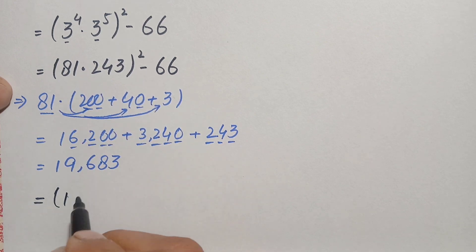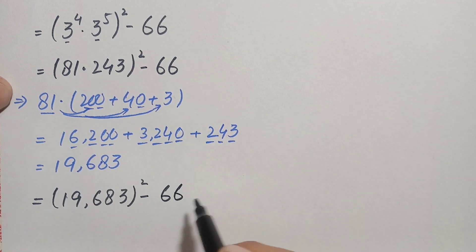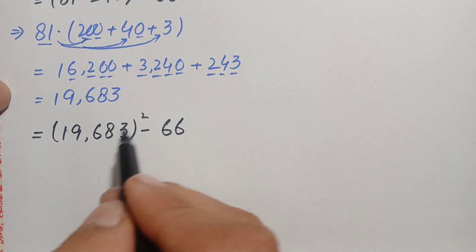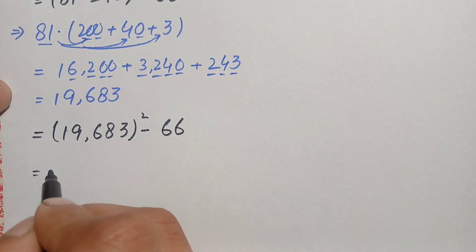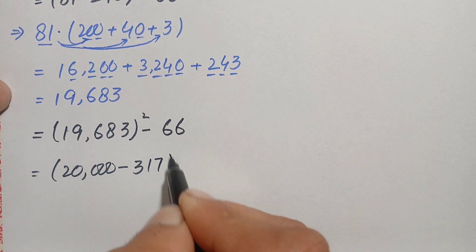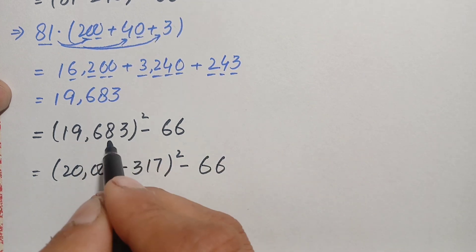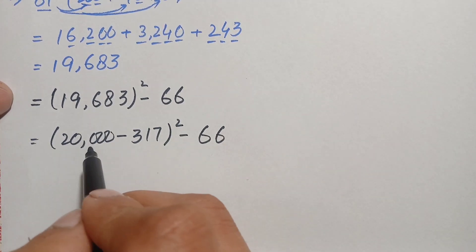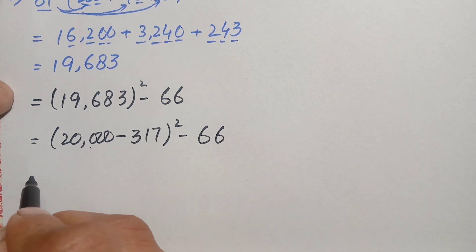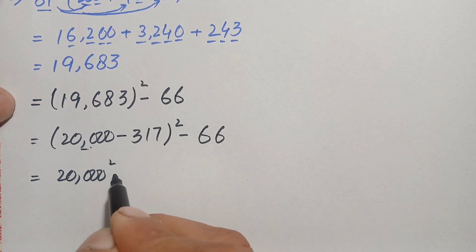So this becomes 19,683 whole squared minus 66. Now we will find the value of this square. We can write 19,683 as the difference 20,000 minus 317, so this becomes (20,000 minus 317) whole squared minus 66. This is much easier to compute.